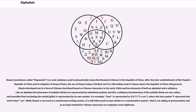Zhuyin, sometimes called Bopomofo, is a semi-syllabary used to phonetically transcribe Mandarin Chinese in the Republic of China. After the later establishment of the People's Republic of China and its adoption of Hanyu Pinyin, the use of Zhuyin today is limited, but it is still widely used in Taiwan where the Republic of China still governs. Zhuyin developed out of a form of Chinese shorthand based on Chinese characters in the early 1900s and has elements of both an alphabet and a syllabary. Like an alphabet, the phonemes of syllable initials are represented by individual symbols, but like a syllabary the phonemes of the syllable finals are not. Rather, each possible final, excluding the medial glide, is represented by its own symbol. While Zhuyin is not used as a mainstream writing system, it is still often used for writing pronunciation as an input method for Chinese characters on computers and cell phones.